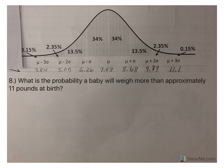Number eight: what is the probability a baby will weigh more than 11 pounds at birth? Here's about 11. More is to the right, and based off the empirical rule, that would be approximately 0.15%. So less than 1% of babies are more than 11 pounds. So if you have a kid that's more than 11 pounds, that is highly unusual.